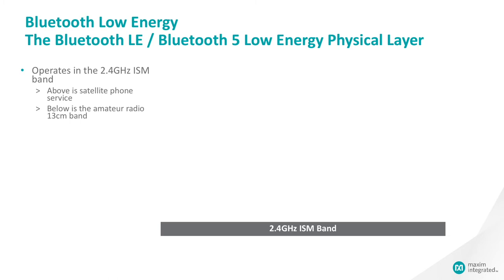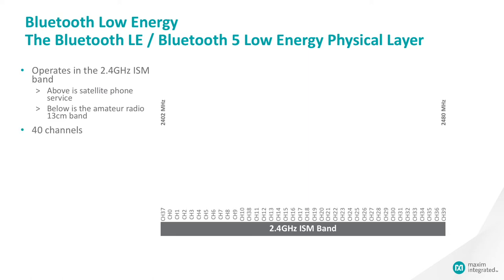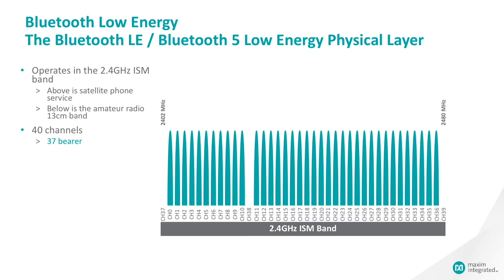In the United States, the frequencies above 2483.5 MHz are used for satellite phone service. Below 2400 MHz is the amateur radio 13 cm band, which is often used for mesh networking. The ISM band from 2402 MHz to 2480 MHz is divided into 40 channels, each 2 MHz wide. 37 of these channels are considered bearer channels — they are designed to carry user data. Bluetooth radios will transmit on one of these channels for a brief time, then hop to another bearer channel, minimizing interference with other transmitters.